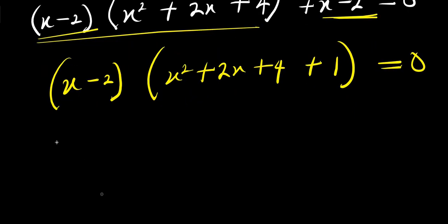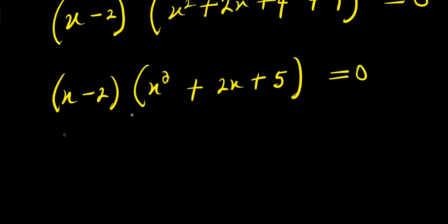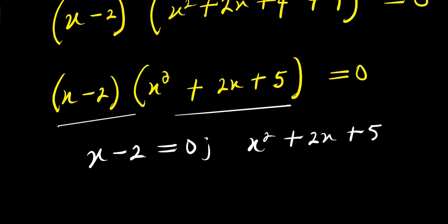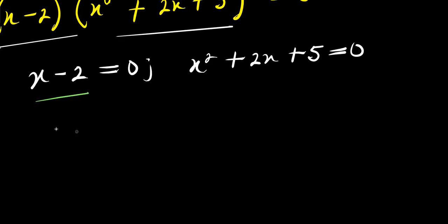So we simply have x minus 2 times x squared plus 2x plus 5 equals 0. Now we equate each of these to 0. I have x minus 2 equals 0, and x squared plus 2x plus 5 equals 0. So if x minus 2 equals 0, that means x equals 2. This is my x₁.